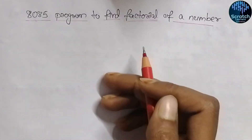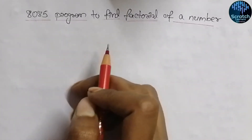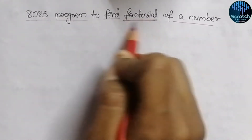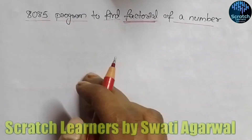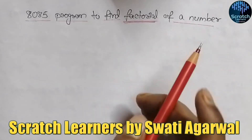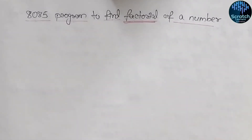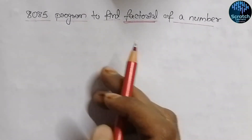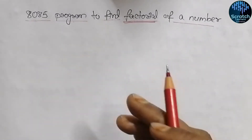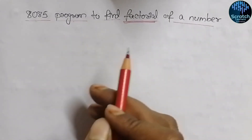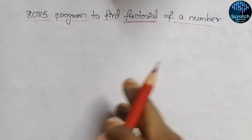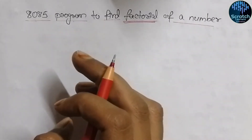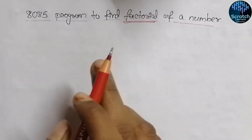Hello guys and welcome to today's video. We will be discussing the 8085 program to find out the factorial of a number. In the last video we discussed about the Fibonacci series. We have also discussed the addition and multiplication of two numbers in the 8085 microprocessor, and on the basis of those videos we will be discussing the factorial of a number.